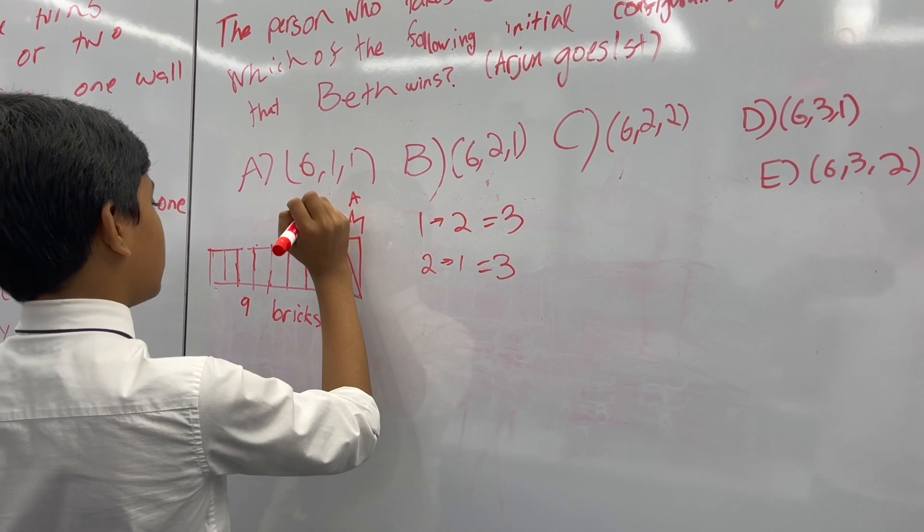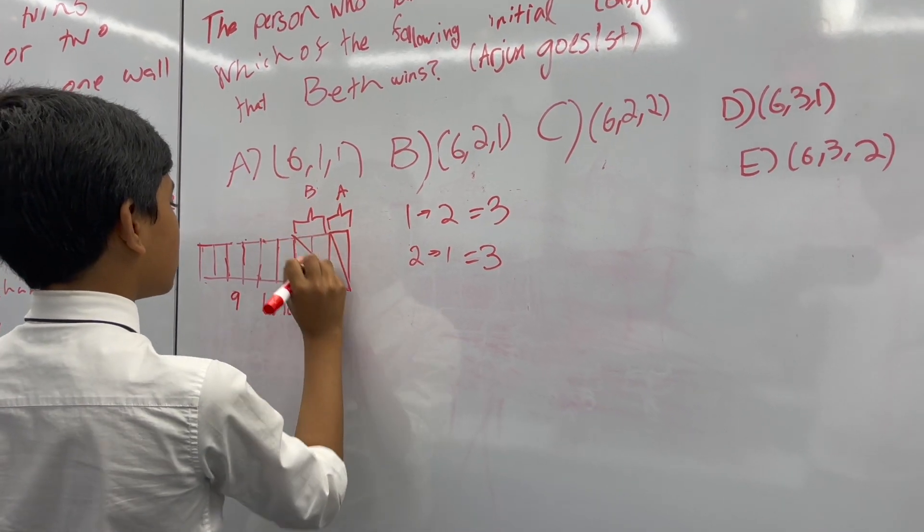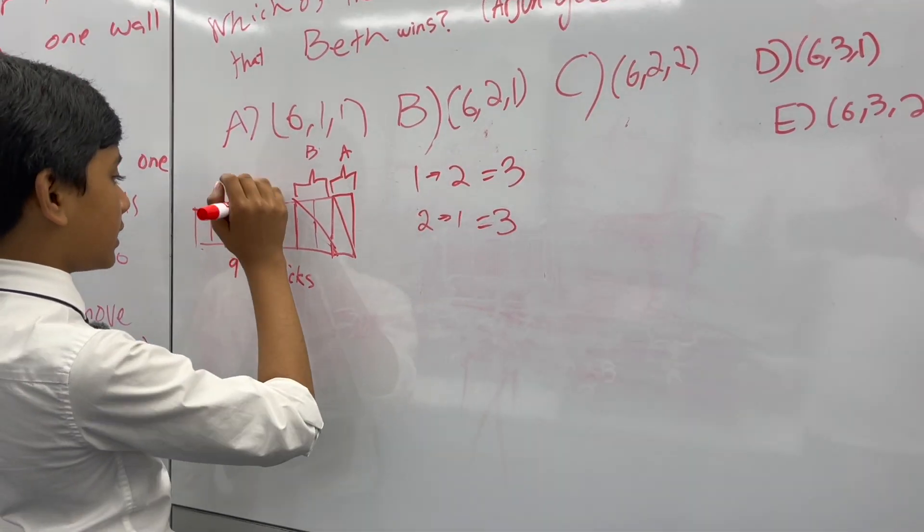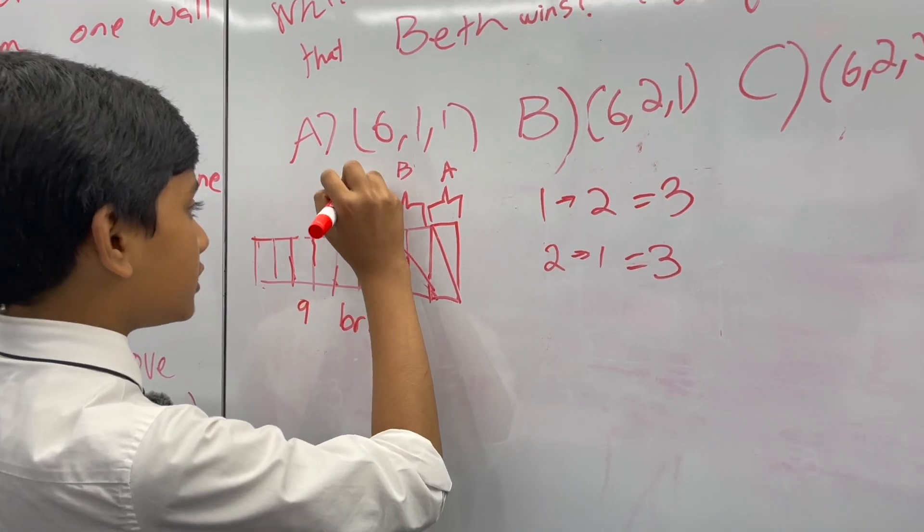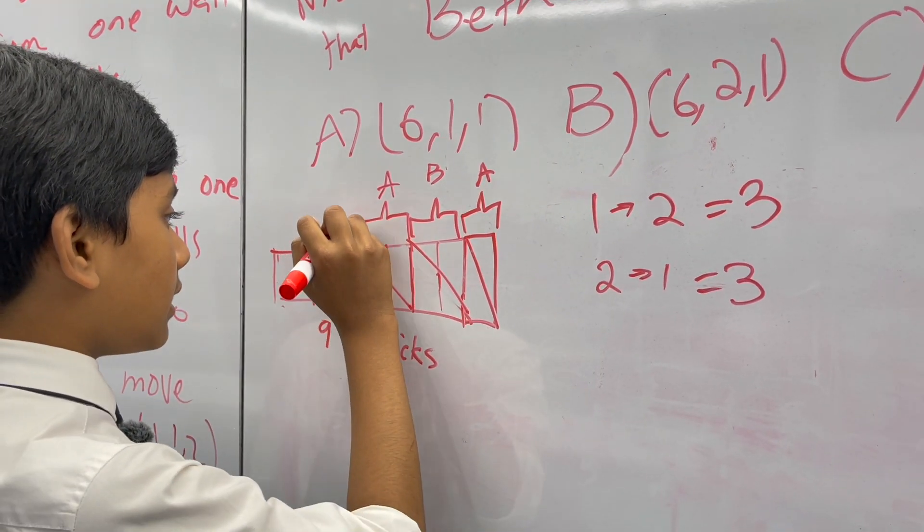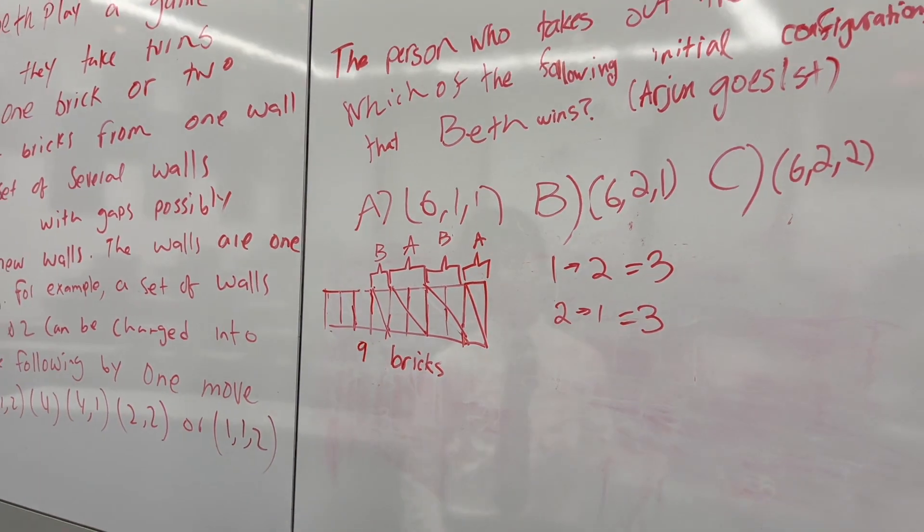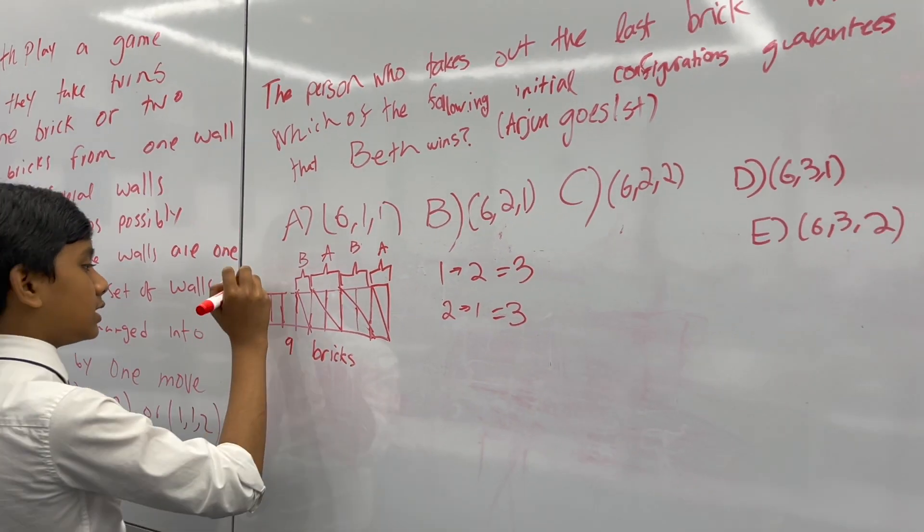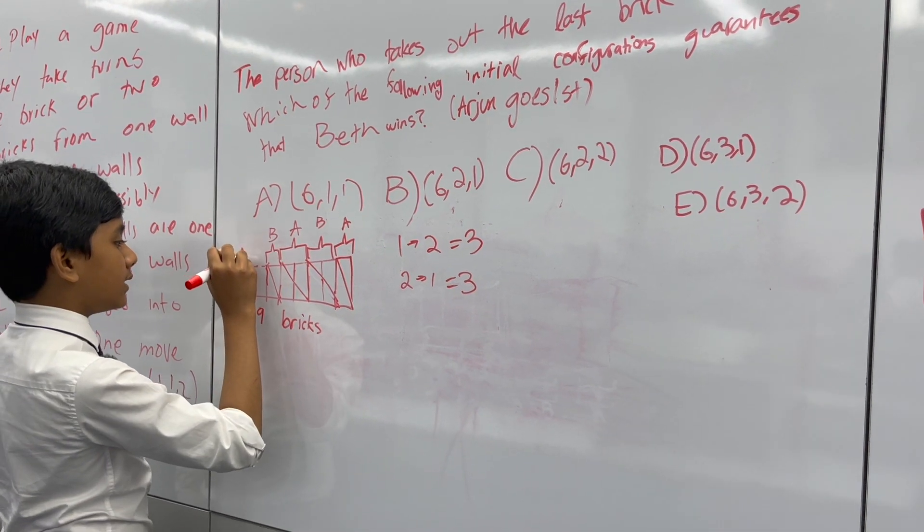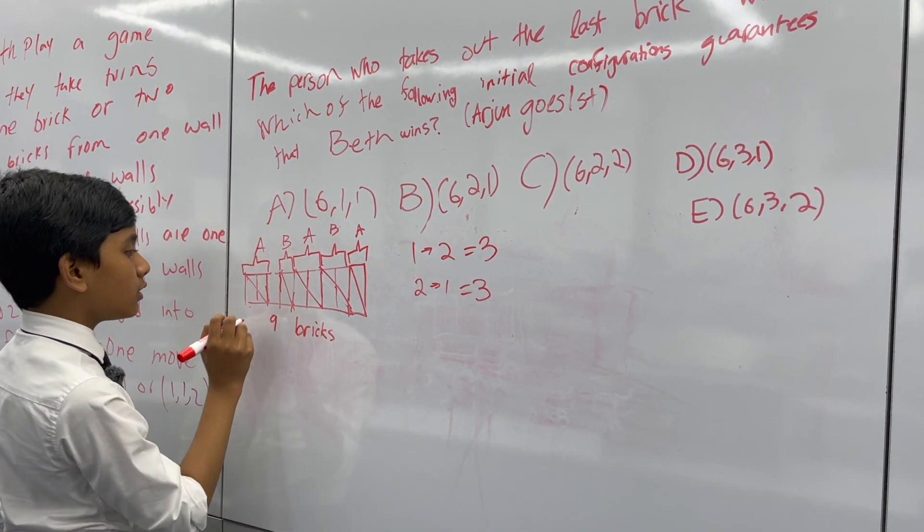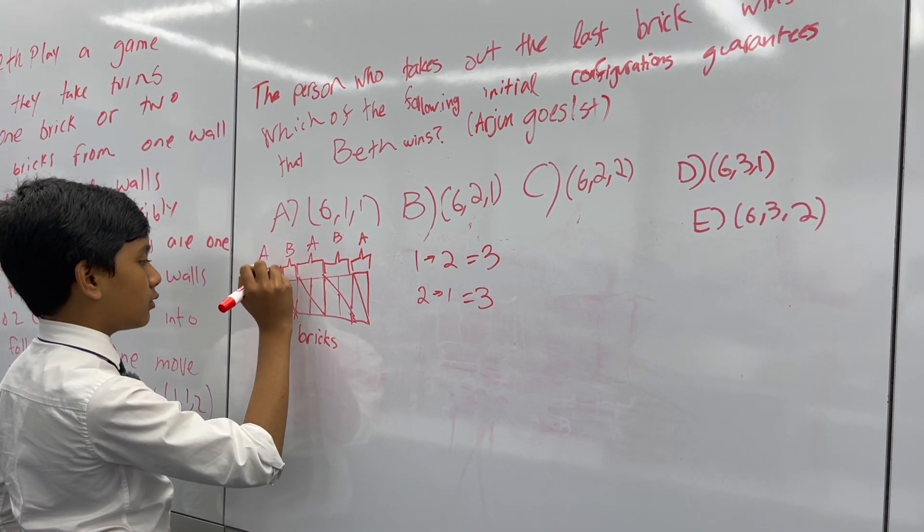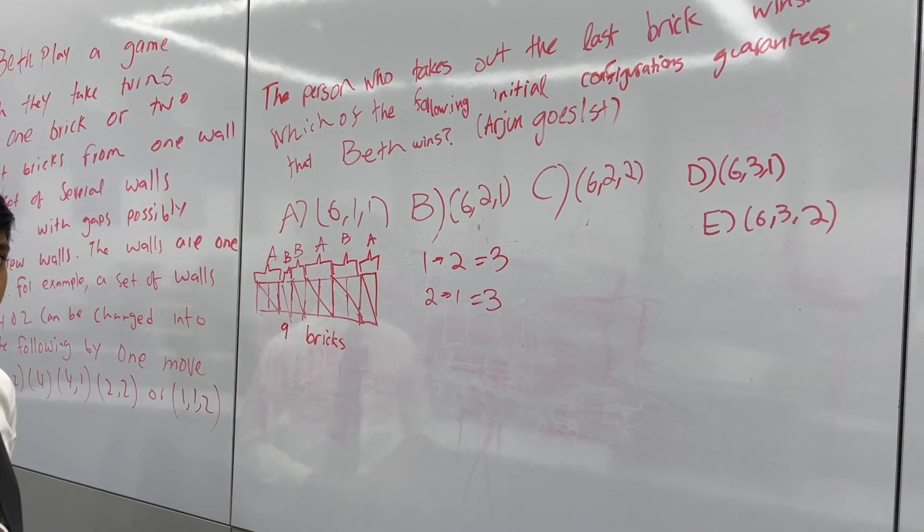Let's say he takes out this brick. Beth then takes out these two. Then Arjun is like, hey, you can't do that. So Arjun takes out two bricks. Then Beth just takes out one brick. So Arjun has no clue what she's doing at this point. So he starts taking from the opposite end. He takes two bricks out of here. And Beth is able to take one brick over here, ending the game.